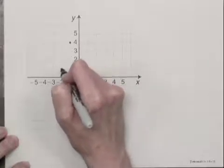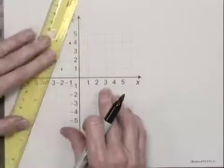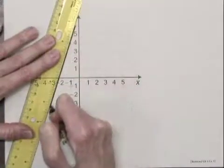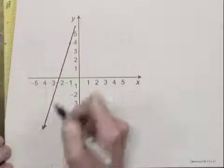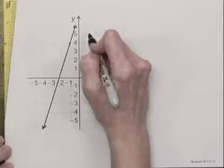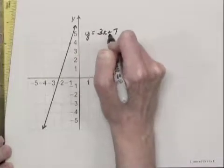And we have the point negative 2, 1. And I'll draw that graph. This is the graph of y equals 3x plus 7.